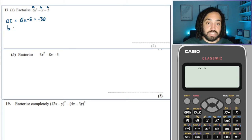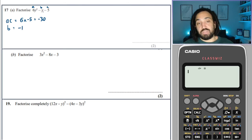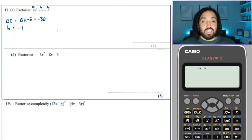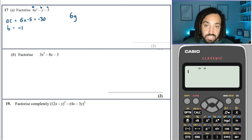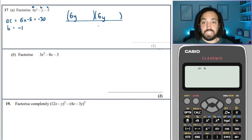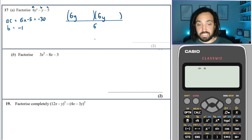And we write that the b term is, well, it's just minus 1 there, because it's just minus y. Okay. We then do 6y, because the a term is 6. 6y, because the a term is 6. All divided by 6, because the a term is 6.